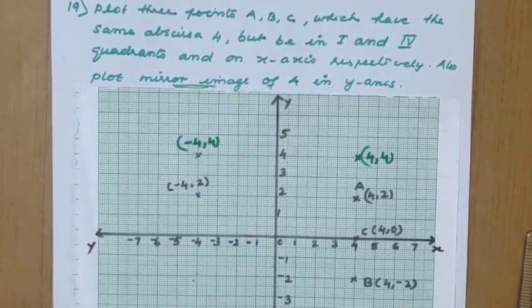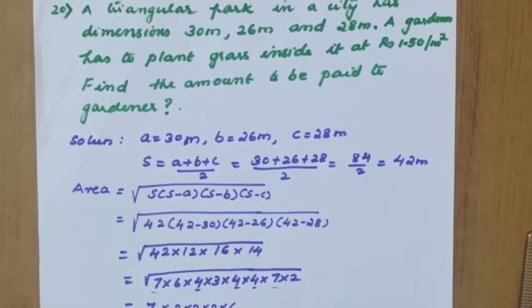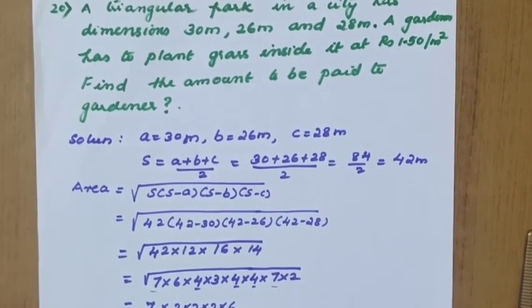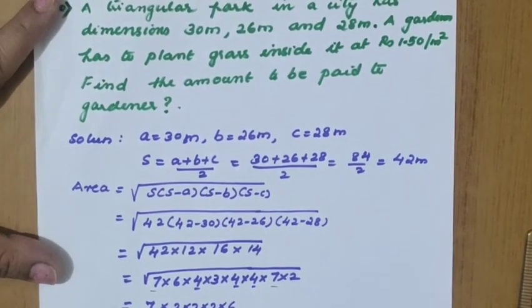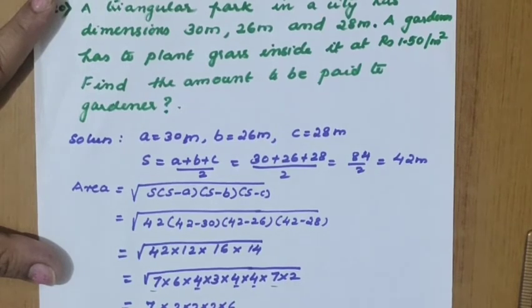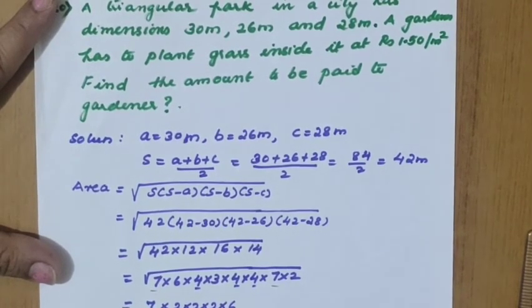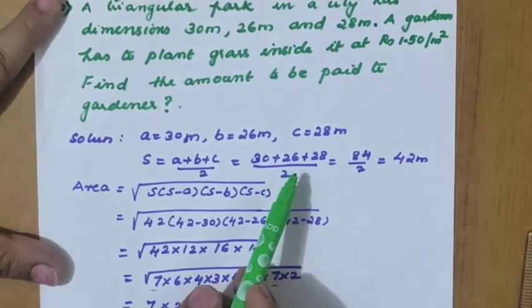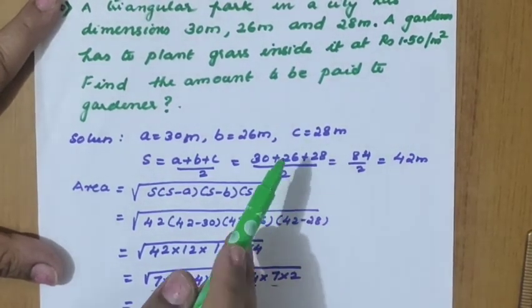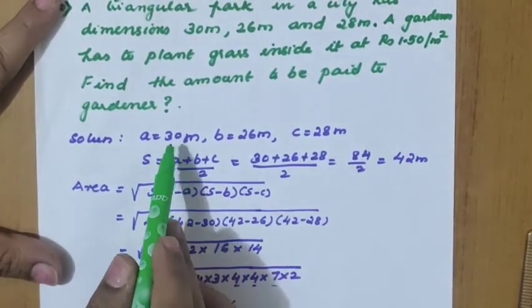Question 20: a triangular park in a city has dimensions 30 m, 26 m, and 28 m. A gardener has to plant grass inside it at rupees 1.50 per meter square. Find the amount to be paid to the gardener. No diagram is required for this question.